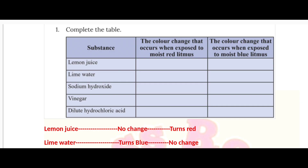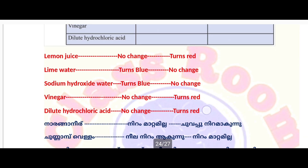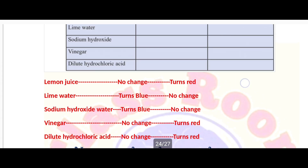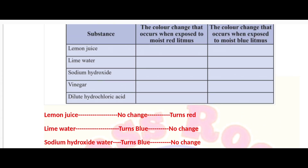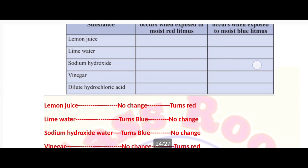For an acidic substance, there is no color change on red litmus paper. Blue litmus paper turns red. For an alkaline substance, red litmus paper turns blue, and blue litmus paper shows no color change.